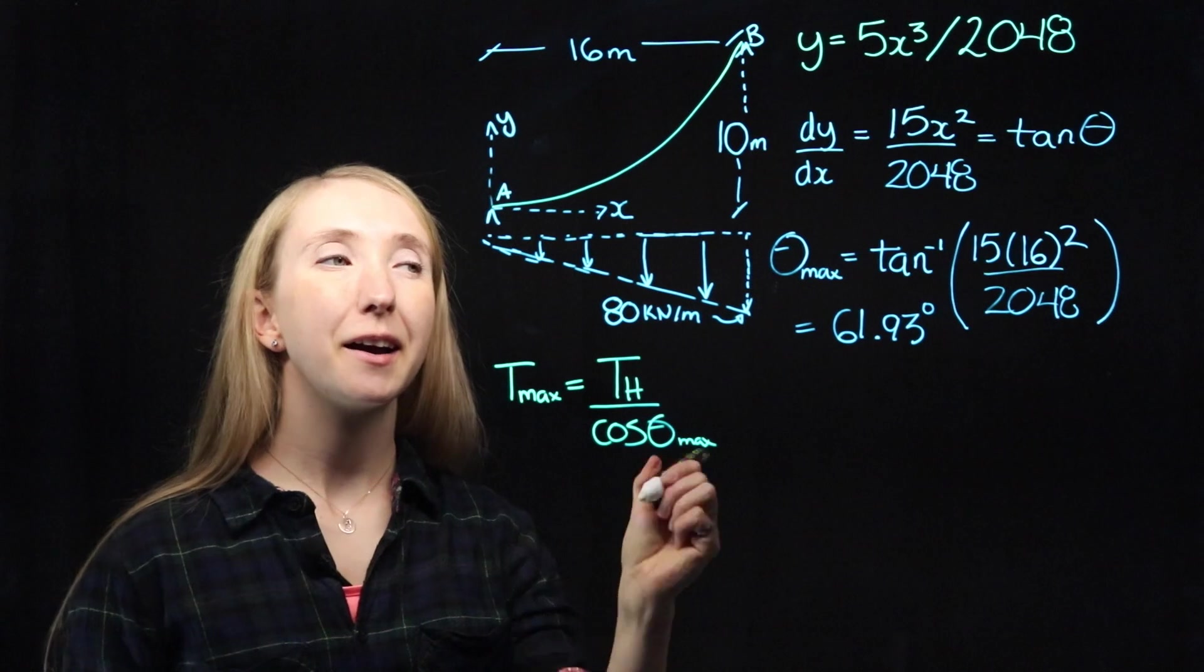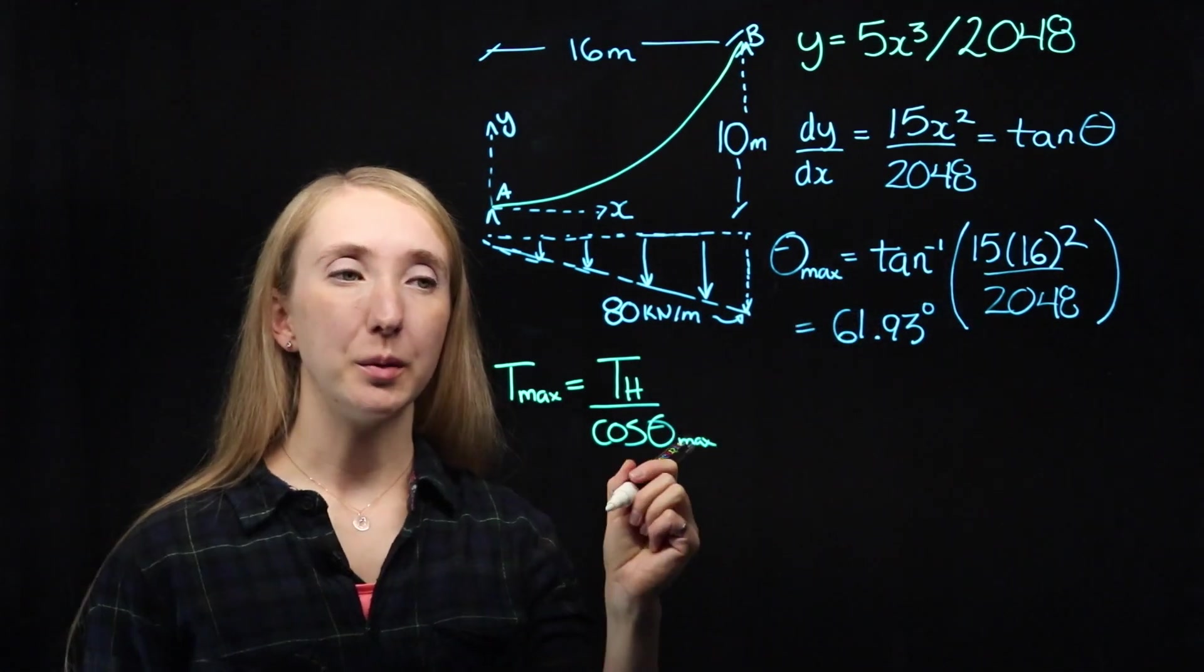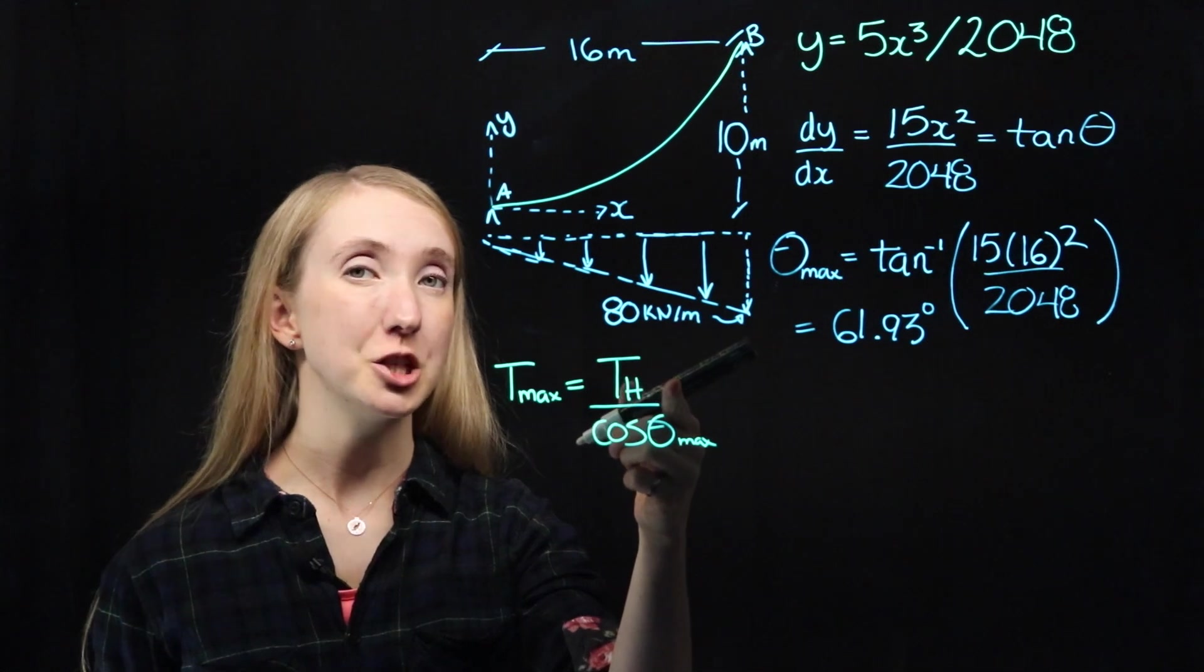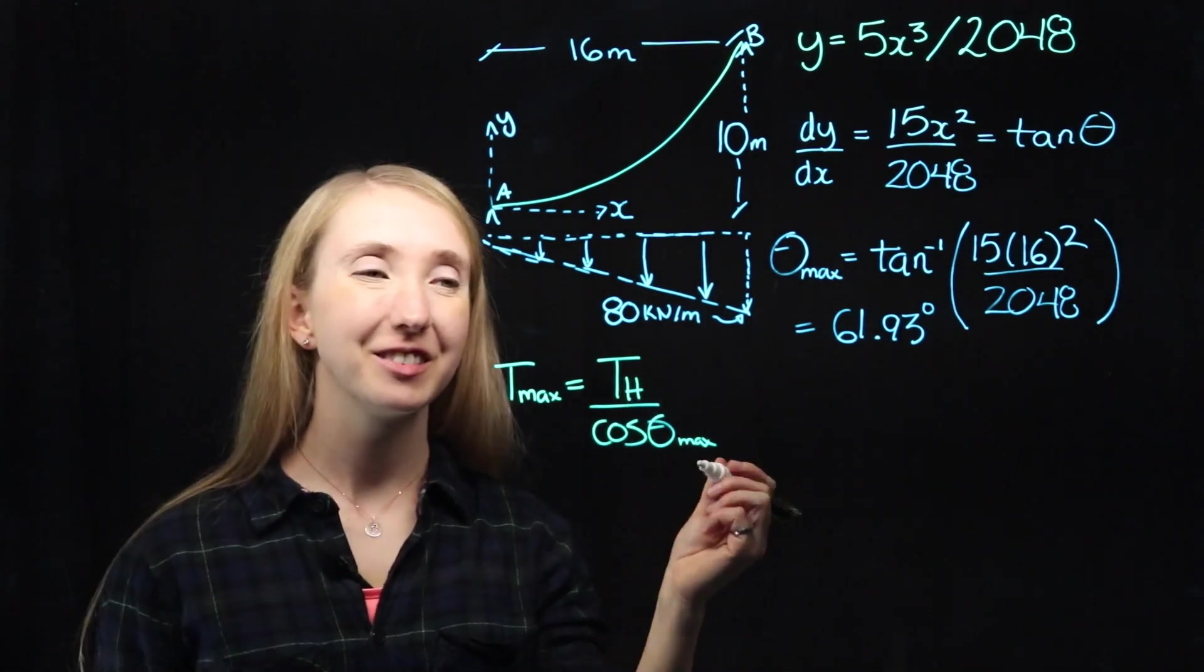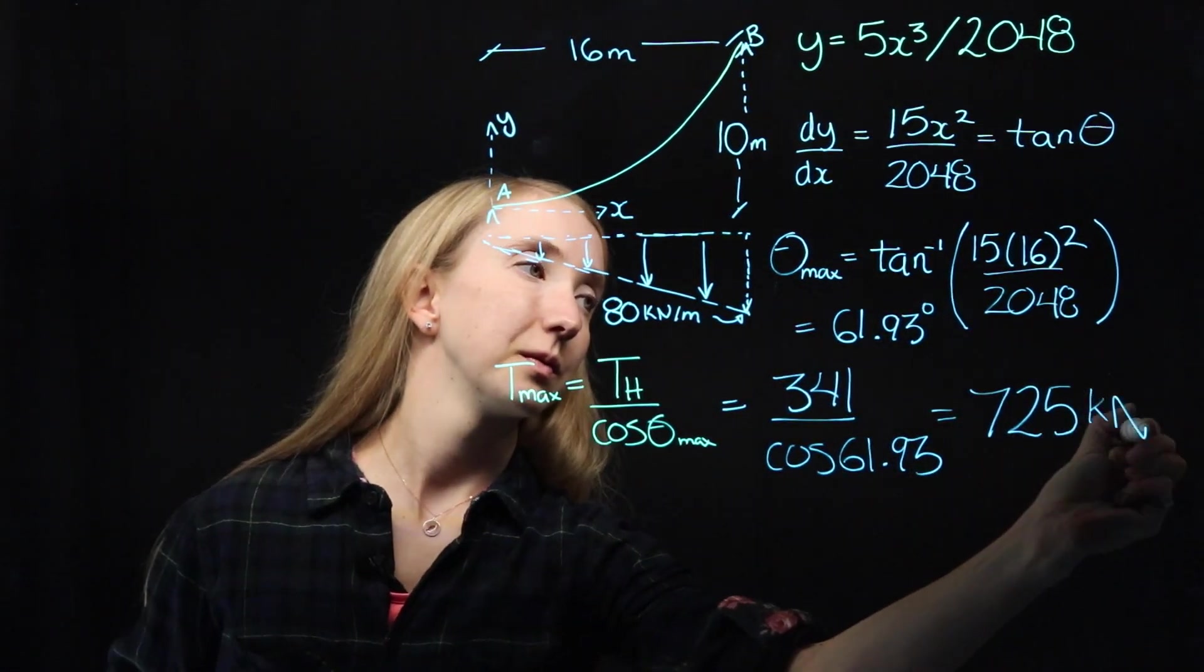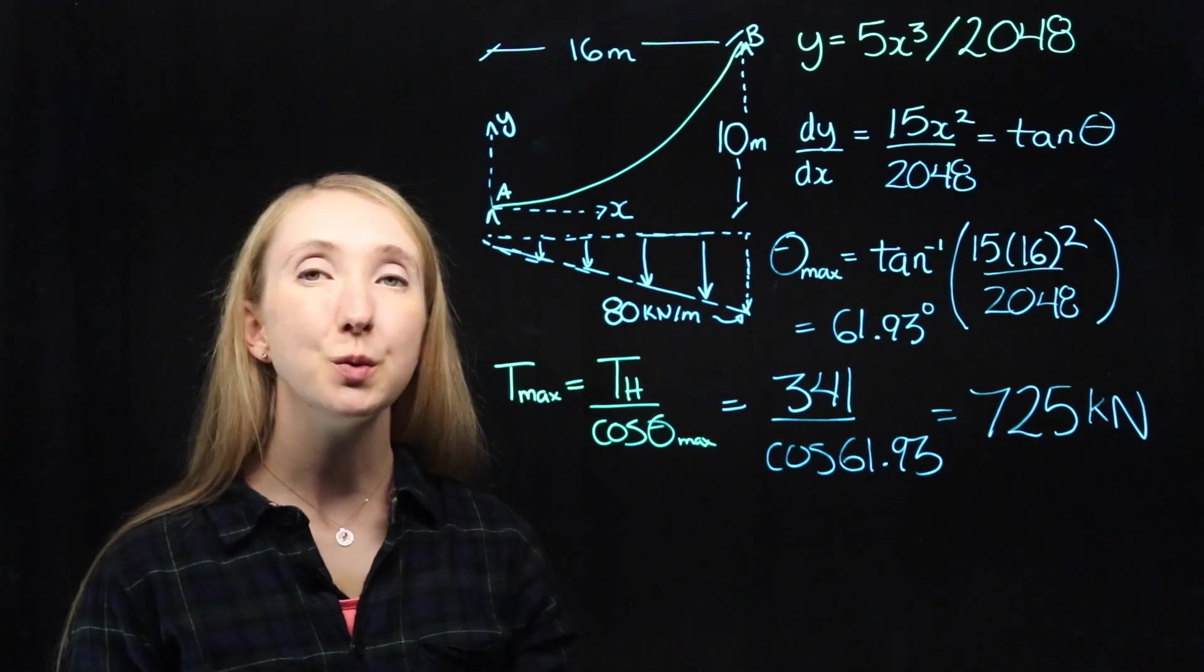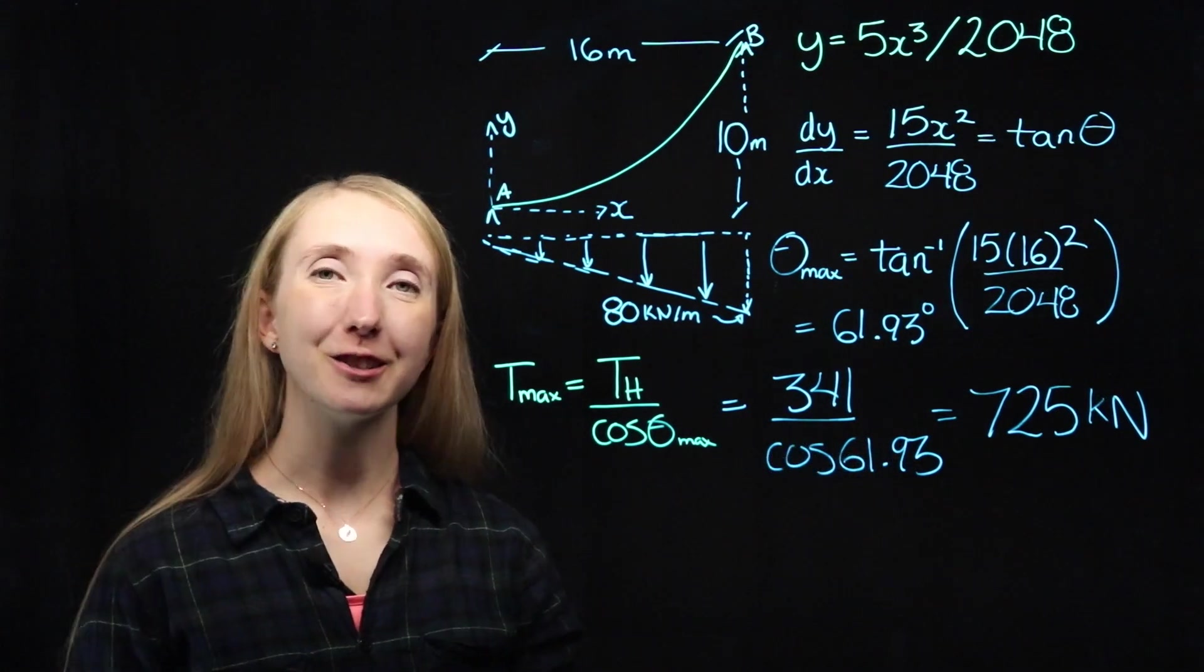So we can use this relationship to solve for our max theta. Now we've found our maximum theta. And in the last step of our problem, we found our horizontal tension TH. So we can just plug and play. And we get that to the nearest kilonewton, our maximum tension is 725.